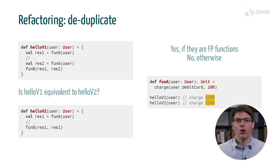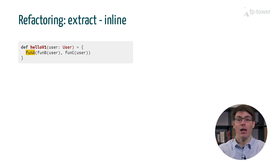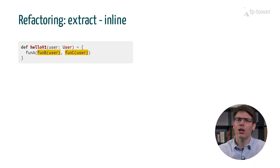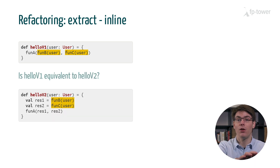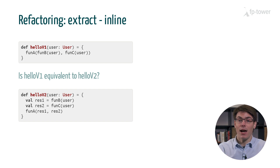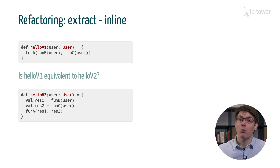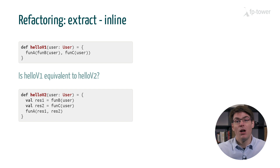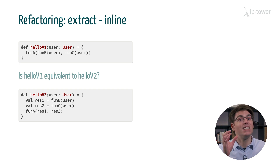Now I have one last example to show you and it's probably the trickiest one, so pay attention. Say hello v1 calls fun a which takes two arguments: fun b of user and fun c of user. You might think this code starts to be difficult to read, so you decide to extract the call of fun b and fun c into separate variables. The question is: is this refactoring safe? Can we do this change for any function fun a, fun b, or fun c and be sure that our program will work the same as before? Well, the answer is most likely no — but the most important point is to find out when it will break. Please pause the video and think about it for a minute or two.